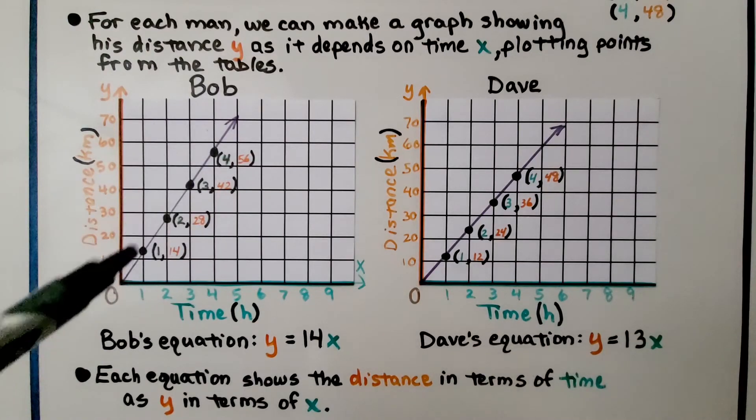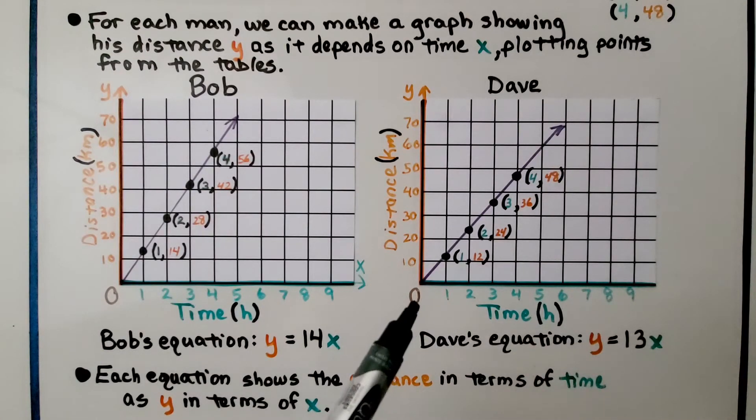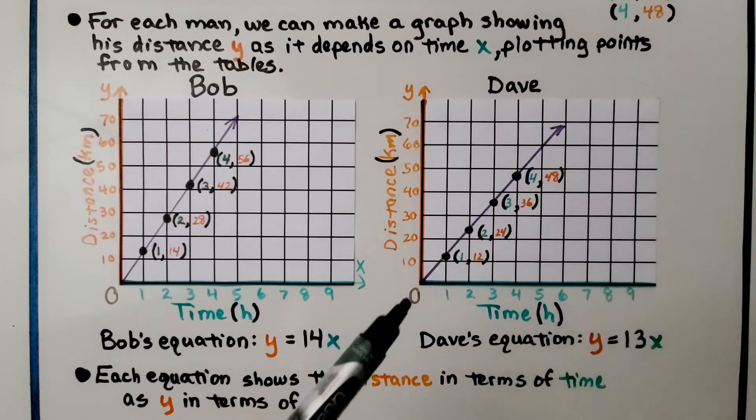We've got all of his points plotted here. We've got Dave's graph and all of his ordered pairs, his points plotted here. Each equation shows the distance in terms of time as y in terms of x.